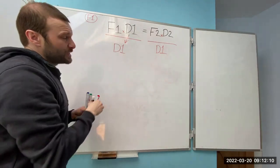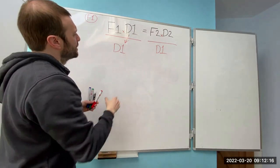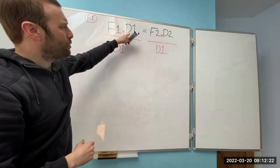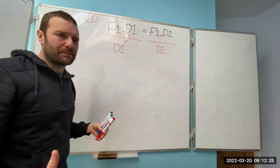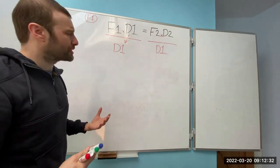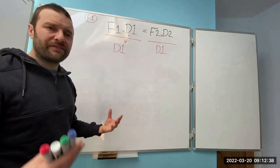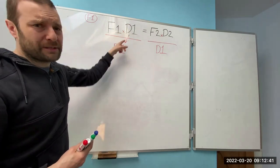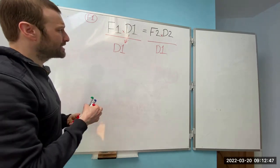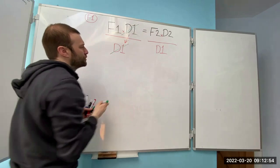Now the formula is balanced — essentially it's like a set of scales. But this is looking untidy, because if I've got times D1 divided by D1, nothing's happened. For example, if Force 1 was 10 newtons and Distance 1 was 5 metres, well 10 times 5 is 50. If I then divide 50 by 5, I'm back to 10 again. So nothing's really changed, and I can remove that.